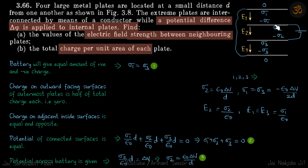We are given four conducting plates. The outermost plates are connected with a wire and we are given a potential delta phi across these two plates. We need to find the electric field strength between the neighbouring plates and the charge per unit area of each plate.